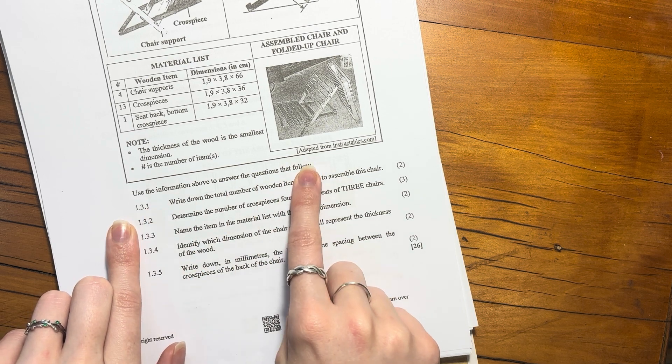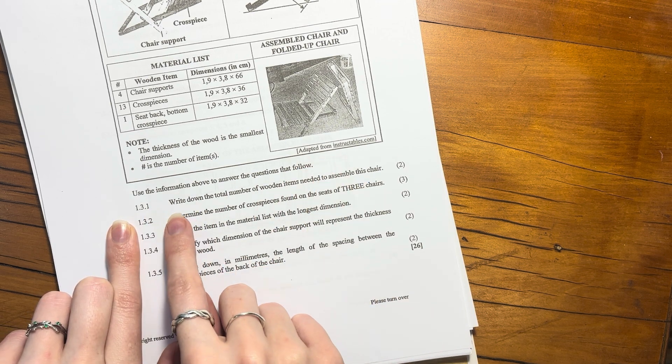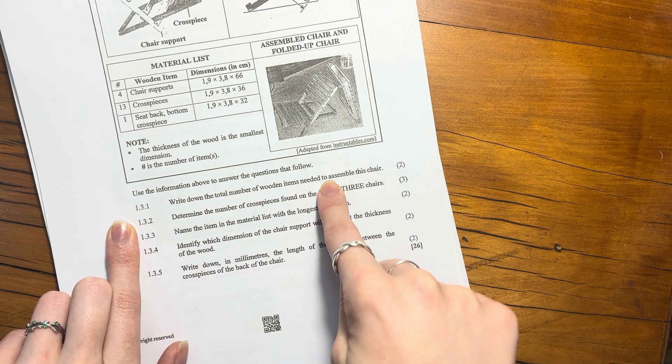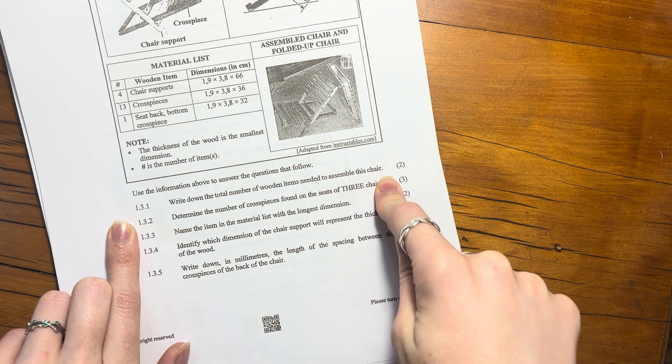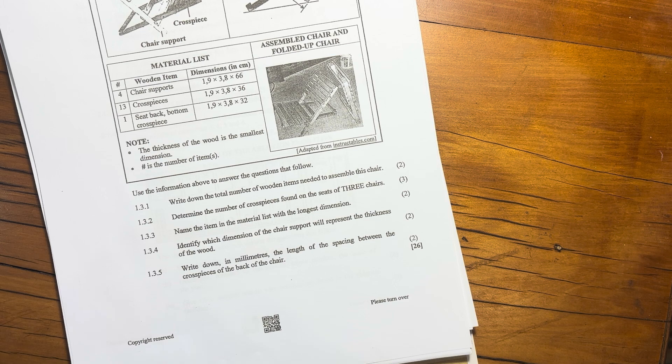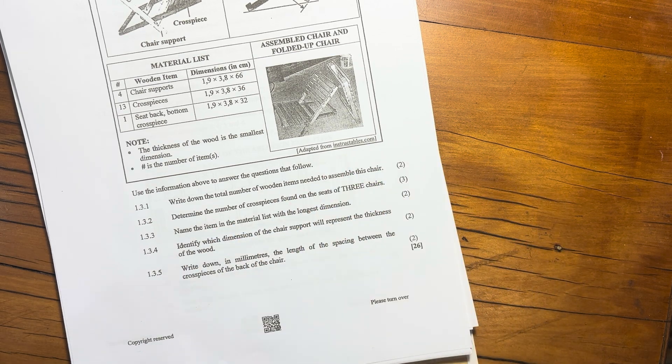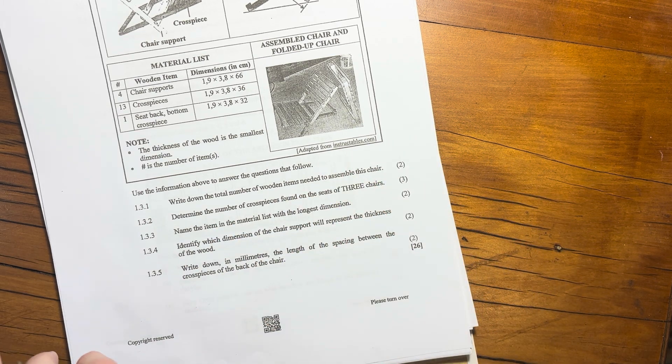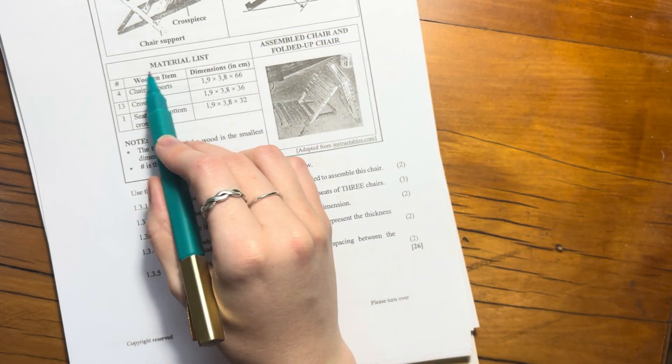So use the information above to answer the questions that follow. Write down the total number of wooden items needed to assemble this chair. When I'm looking at the total number, you should be thinking we'll go to the material list because the material list is going to tell us. So go here, material list.